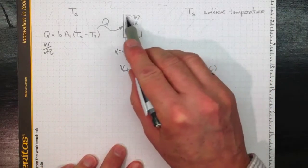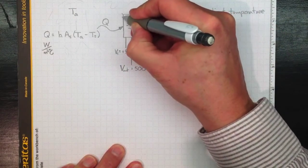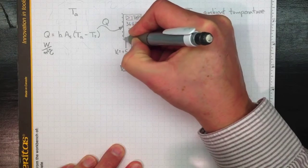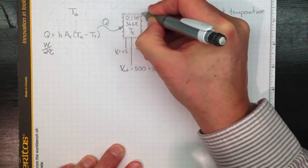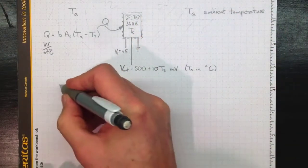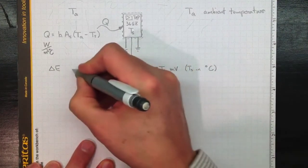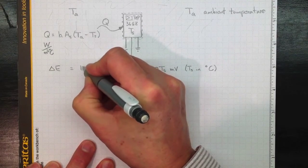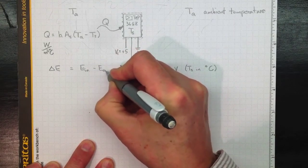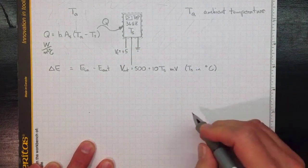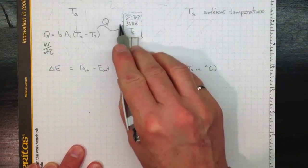Now if we want to know how quickly this warms up, we need to do an energy balance on a control mass. So we'll draw a little control mass boundary all around our TMP36. And we can say that the change in energy inside that control mass must be equal to the energy in, however it goes in, minus the energy out. Energy that comes out no matter how it goes out.